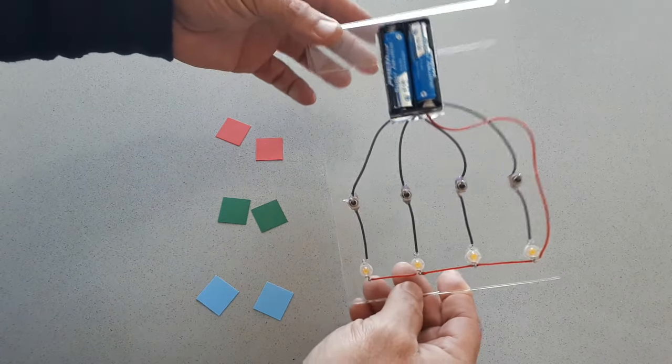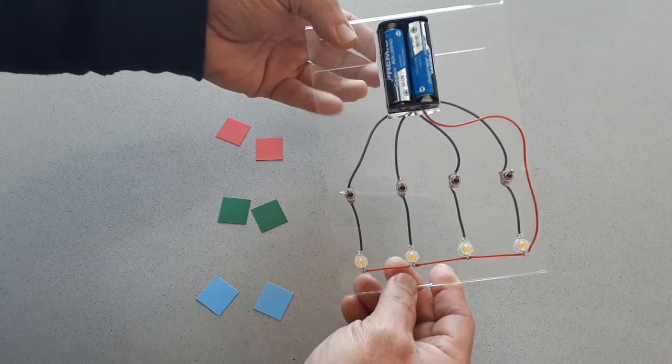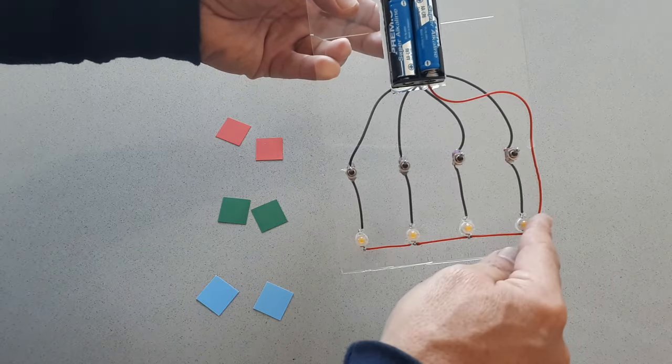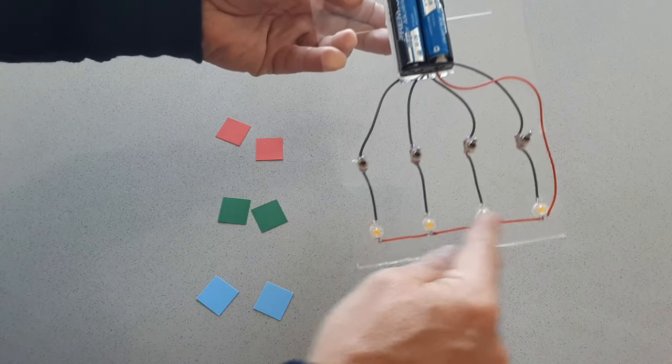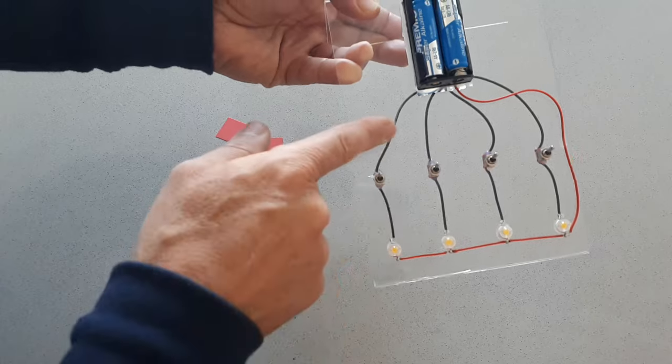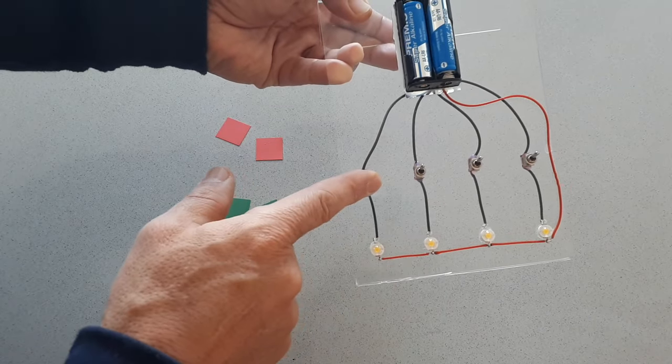This is the first circuit that I learned when I was a kid. This is a very simple circuit in which we have the positive wire that goes to all the LEDs and we have the negative wire that goes to all the LEDs but through an interrupt.